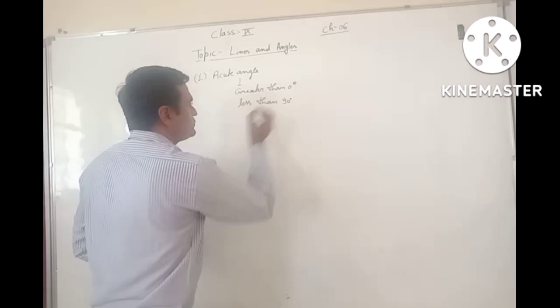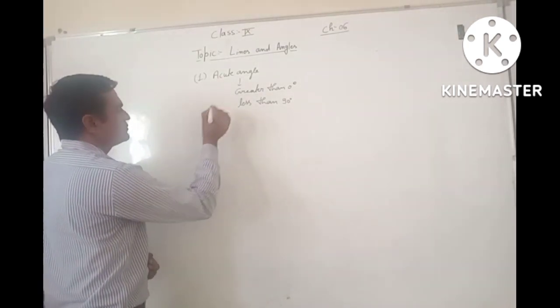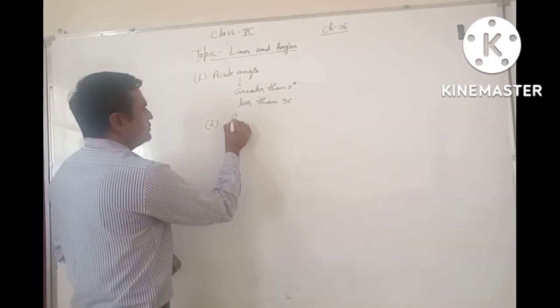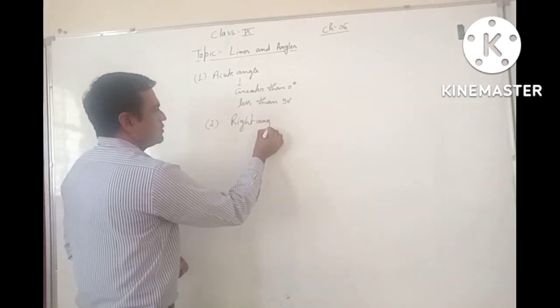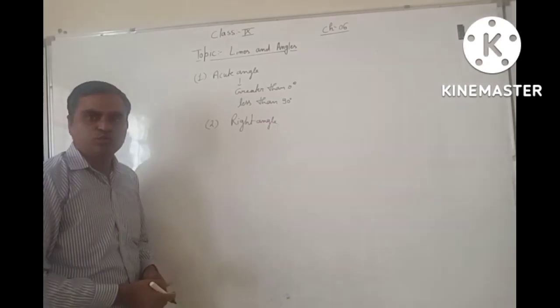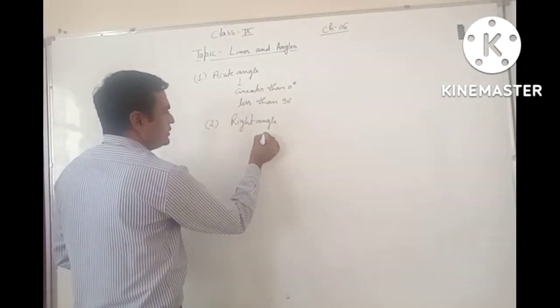Now, the second is Right Angle. Right Angle is an angle whose measure is 90 degree.